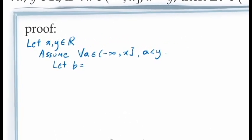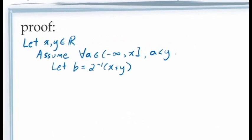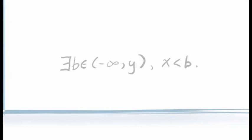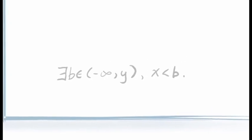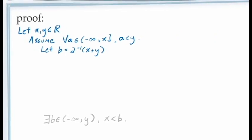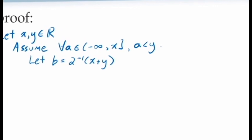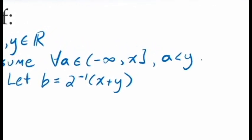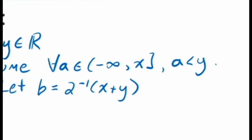Returning to our proof, we're going to assign b = (x + y) / 2. We now need to show this value of b is less than y and greater than x. Our reasoning hinged on the picture showing x < y, so let's extract this from our assumption. Our assumption — that for all a in the closed interval from negative infinity to x, a < y — includes a universal quantifier, so we need to use the principle of universal instantiation, meaning we need to talk about a specific value of a.